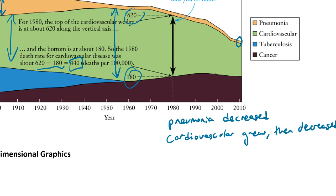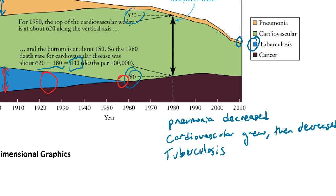For tuberculosis — that's the blue — it started pretty thick, but then it basically just disappeared. Part of that is because somewhere around the 1920s a vaccine was developed, which really helped. This doesn't mean tuberculosis no longer exists — it is still there — but the deaths are so small now that it doesn't become visible on this graph. So tuberculosis decreased and almost disappeared.